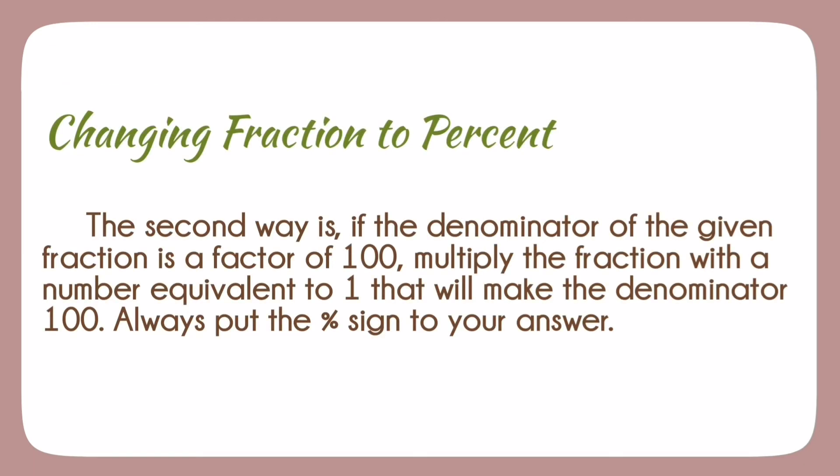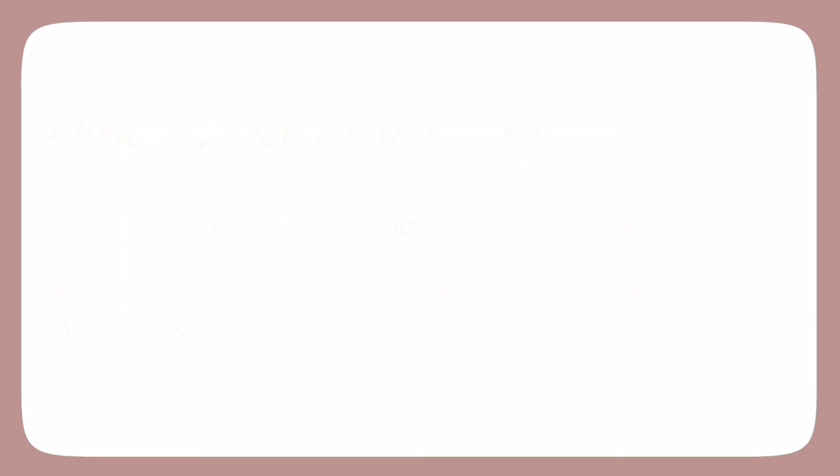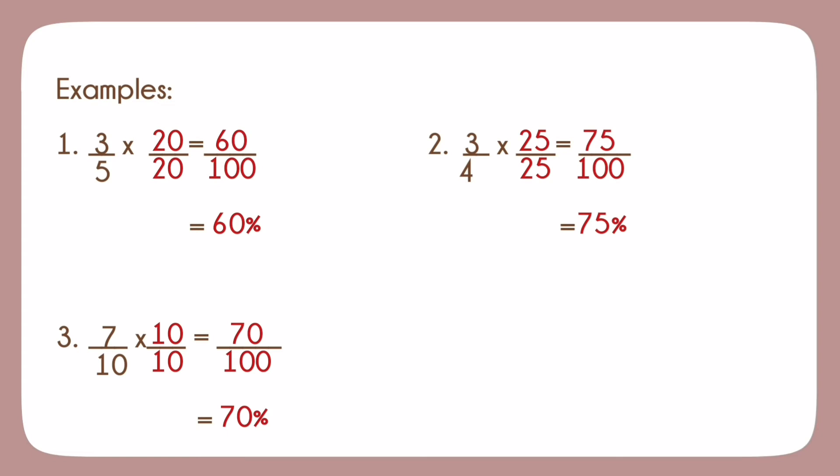The second way is if the denominator of the given fraction is a factor of 100, multiply the fraction with the number equivalent to 1 that will make the denominator 100. Always put the sign to your answer. Examples. In the examples, all the denominators is a factor of 100 or all denominators can be multiplied to another number that results to 100. In number 1, the denominator is 5. 5 can be multiplied to 20 to have a product 100. The same with example number 2 and 3 where the given denominator is multiplied to the fraction with the number that will make the denominator 100.